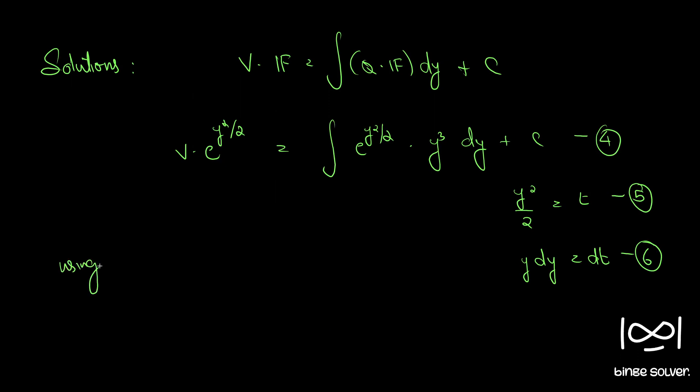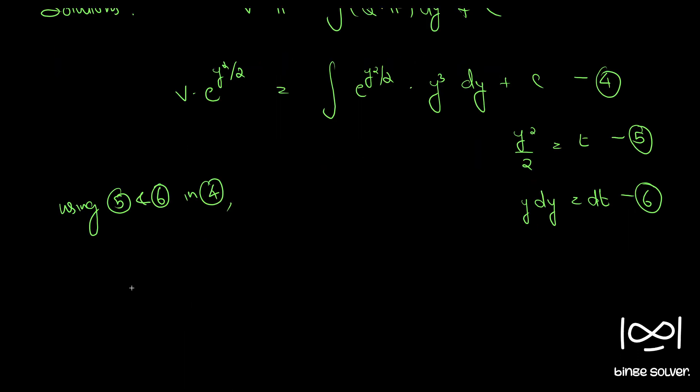Using 5 and 6 in 4, we have v e raise to y square by 2 equal to integral e raise to t. Since y square y dy becomes y square dt, and y square is 2t, we get 2t dt plus c.